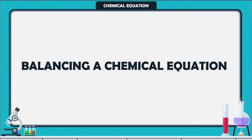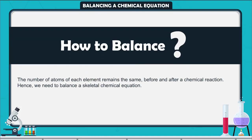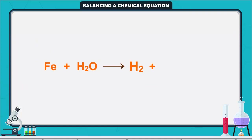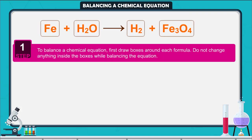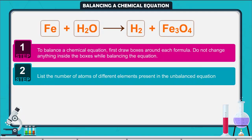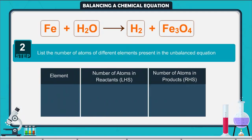Balancing a chemical equation. The number of atoms of each element remains the same before and after a chemical reaction. Hence, we need to balance a skeletal chemical equation. Let us try to balance the following chemical equation step by step. Step 1: To balance a chemical equation, first draw boxes around each formula. Do not change anything inside the boxes while balancing the equation. Step 2: List the number of atoms of different elements present in the unbalanced equation.